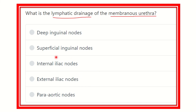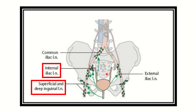We have to find out which one of the options is the answer. Here we can see the urinary bladder, and just below it is the prostatic urethra, then the membranous urethra — which is a very short part — and the long terminal part is the penile part. According to the question, we want to identify this membranous part.